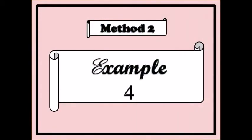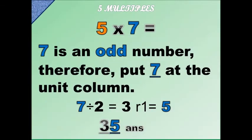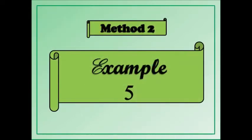Example four, method two: five times seven. Seven is an odd number, so you divide it by two — you get three, remainder one. The remainder one becomes five, so you put it behind the three. So you have thirty-five. Five times seven equals thirty-five. If it's an odd number, you put five there; if it's even, you put zero.